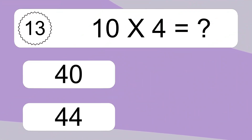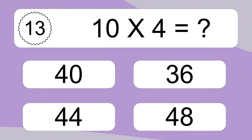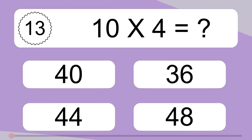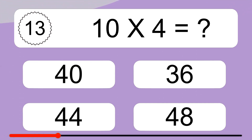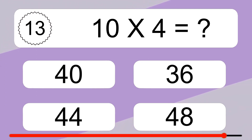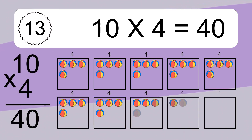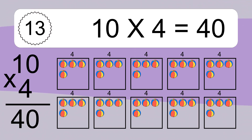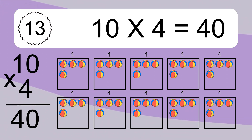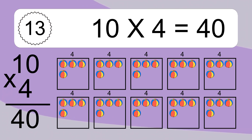10 times 4 equals what? 10 times 4 equals 40. We have 10 boxes, and each box has 4 colorful balls inside. If you count all the balls in all the boxes together, you will have 10 times 4 balls. This equals 40 balls.